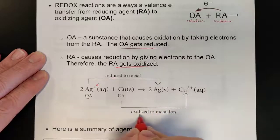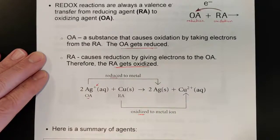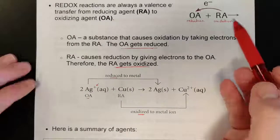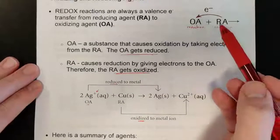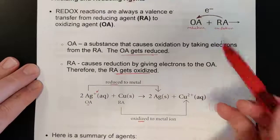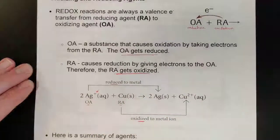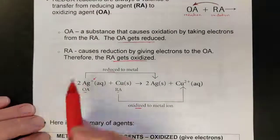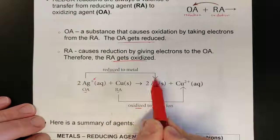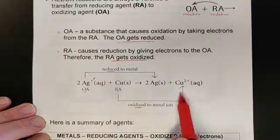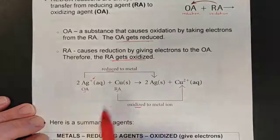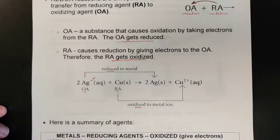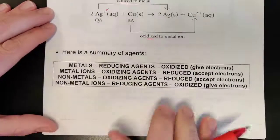Conversely, copper ends up losing two electrons as you move from reactant to product, so therefore we say it is oxidized. Things that want to lose their electrons are generally your RAs, so it makes sense to label copper as the RA as well. We can see the process for each one and also describe them by agency.